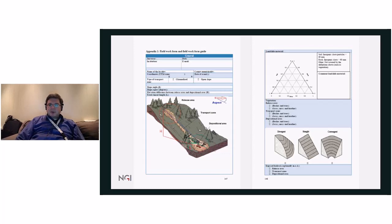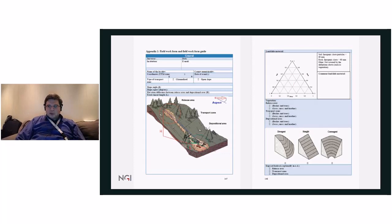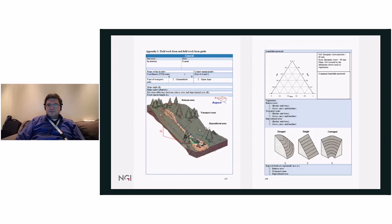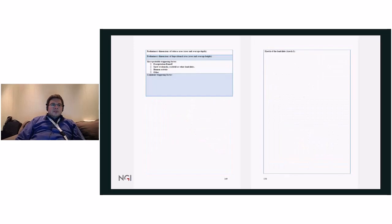On the second page, we give information about the landslide material, including the percentage of rock, soil, and other particles. We also give information on vegetation and the morphology or shape of the slope — divergent, straight, or convergent — and whether there is exposed bedrock at the different areas: release, transport, or deposition. We give preliminary dimensions of both the release and deposition areas, the most probable triggering factor with comments, and importantly, the ability to prepare sketches in the field based on observation.